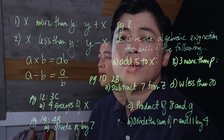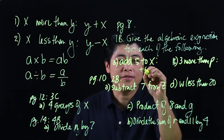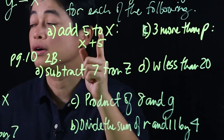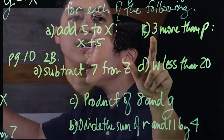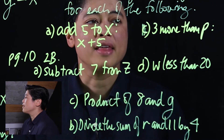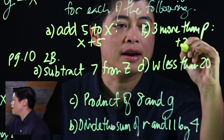Starting with page 8, the instructions say: give the algebraic expression for each of the following. For example, 'add 5 to x' means we're adding 5 to x, so we write 5 + x. Letter c says 'three more than p,' so we write 3 + p.